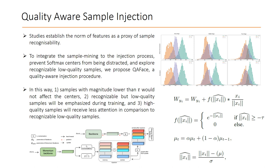The goal is to explore underrepresented recognizable low-quality samples. To this end, instead of using a fixed hyperparameter during the injection, we use an adaptive function F to weight the sample's representation during the injection. Before calculating each sample's injection weight, we normalize the representation norm using batch statistics. In this way, samples with magnitude lower than a threshold would not affect the centers. Recognizable but low-quality samples will be emphasized during training, and high-quality samples will receive less attention in comparison to recognizable low-quality samples.